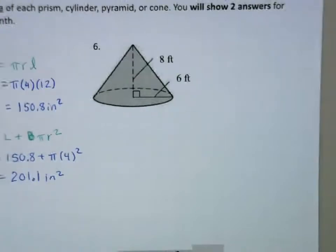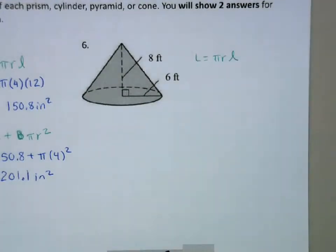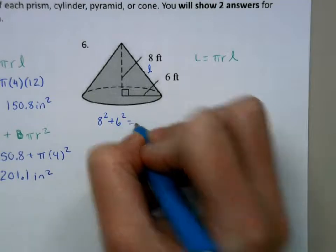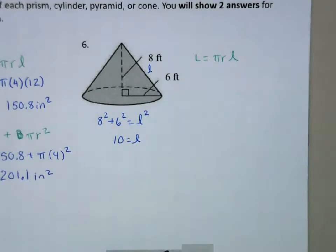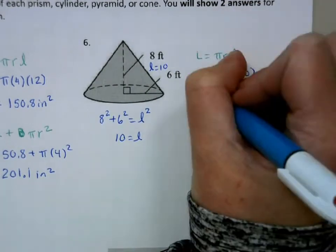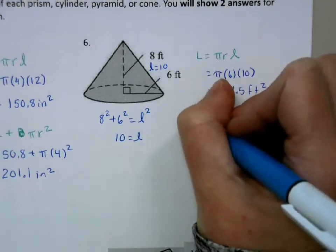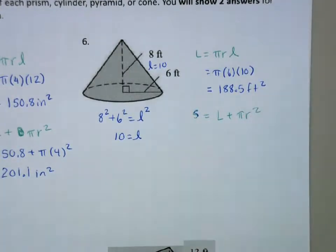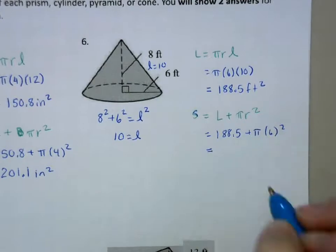For this next cone, we use the same formulas, but we have an additional calculation because we're given the height of the cone but not the slant height. So I'll do the Pythagorean theorem: 8 squared plus 6 squared equals L squared. When we're done, we get that the slant height is 10. So this will be π times 6 times 10, which is 188.5 feet squared. The surface area is the lateral area plus πr², so 188.5 plus π times 6 squared, which is 301.6.